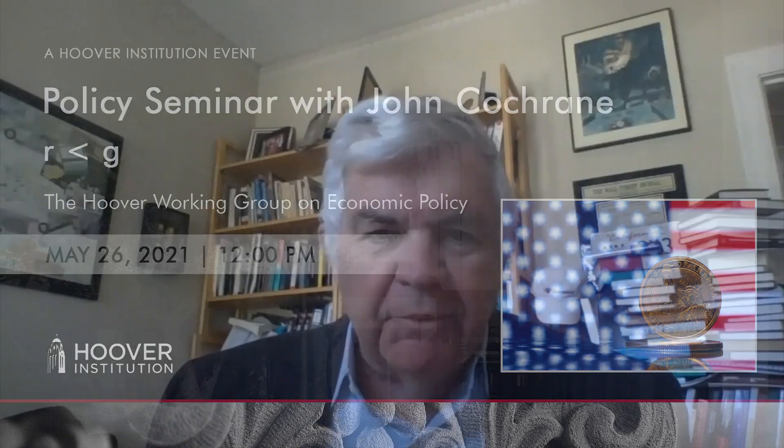Welcome everybody to this meeting of the Economic Policy Working Group at Hoover Institution. We're very pleased to have our colleague John Cochrane speak today about the title 'R is less than G.' John is the Rosemary and Jack Anderson Senior Fellow at Hoover, author of the blog Grumpy Economist, and is finishing a book about the theory of the price level. We'll entertain questions via chat, out loud, or however you like. Go ahead, John.